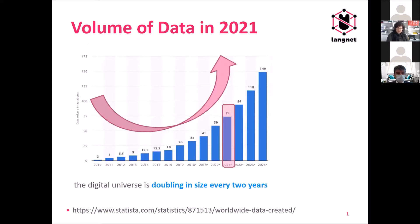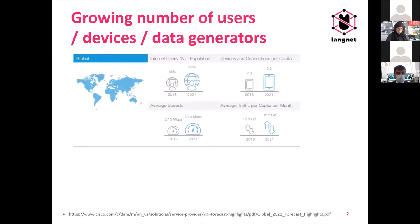So where do we stand today? Starting really very globally: the volume of data in 2021 is estimated to be about 74 zettabytes, and the size of the digital universe is doubling every two years. We are witnessing unprecedented quantities of data. Why? Because the number of users is growing daily, and users are using many devices — different kinds of data generators.